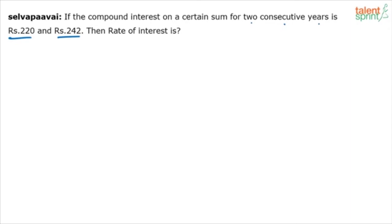But has the question clearly mentioned that the two values are for the first two years? It says compound interest on a certain sum for two consecutive years. Two consecutive years may also mean second year and third year, or fifth and sixth year, or seventh and eighth year. Seventh and eighth year are also two consecutive years. Will your answer be 10% even in that case?